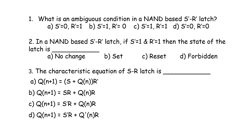First question: What is an ambiguous condition in a NAND-based S'R' latch? In the NAND-based SR latch, when S' is equal to 0 and R' is equal to 0, both outputs go high, and that condition is called the ambiguous or co-valid state.